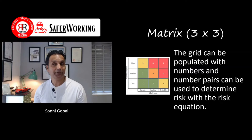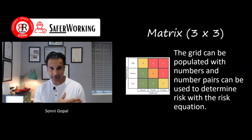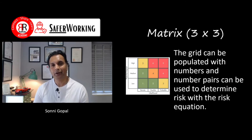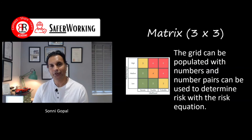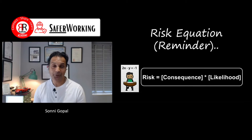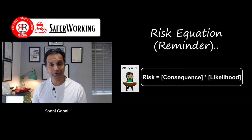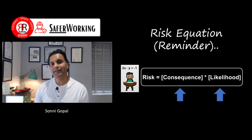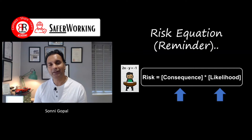With a 3x3 matrix you can populate it with numbers, as shown in the diagram here. Once you've done your risk assessment you'd have a feel for what the likelihood and consequences are. When you multiply the two together you get a position on the grid. Multiplying the two together is of course the risk equation — a product of consequences and likelihood — so you're taking a quantitative output and putting it into a graphical format on the grid, the matrix.